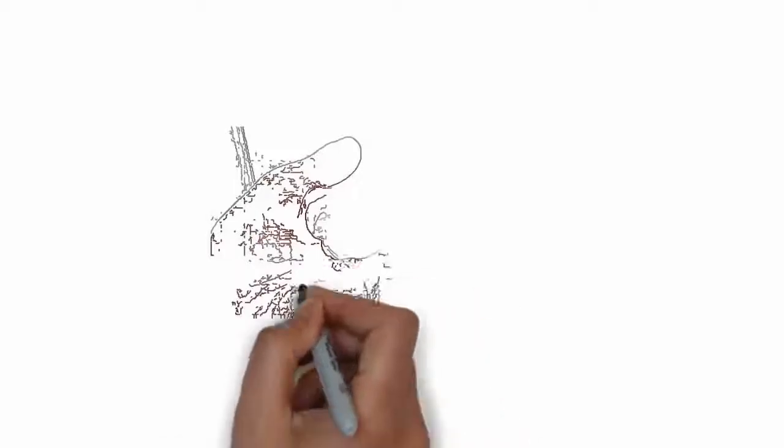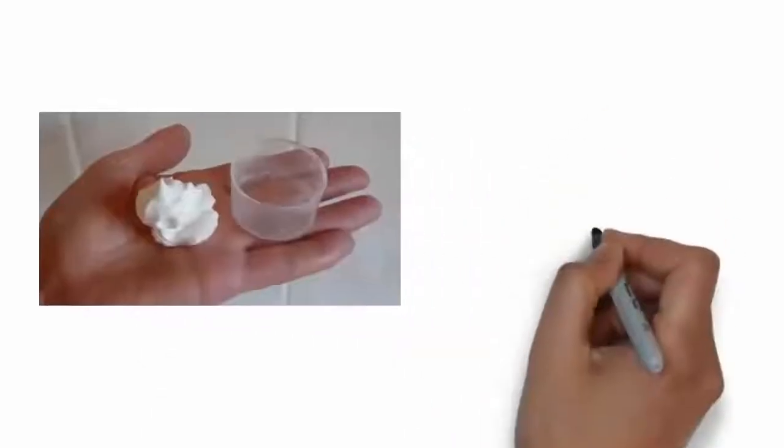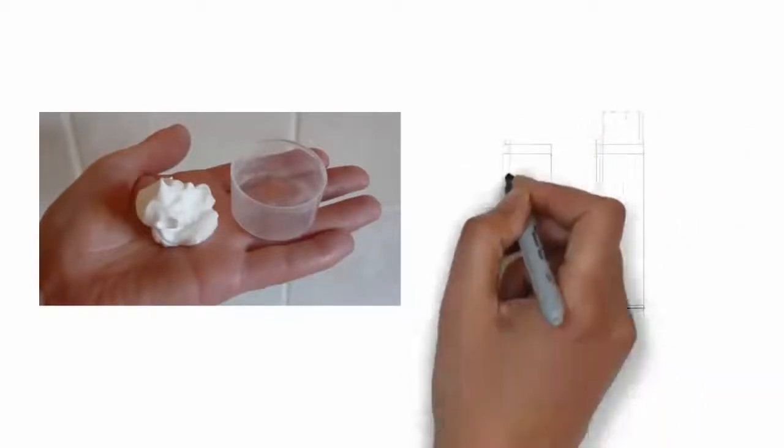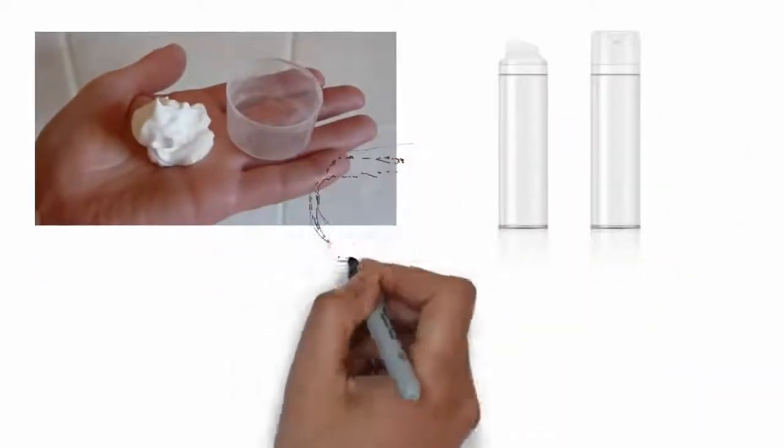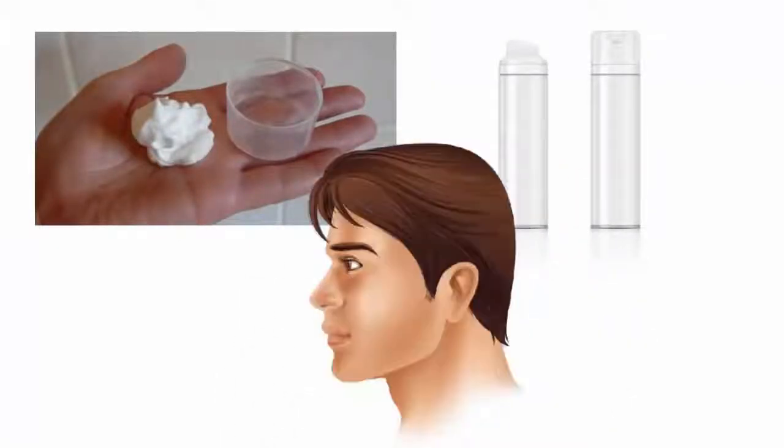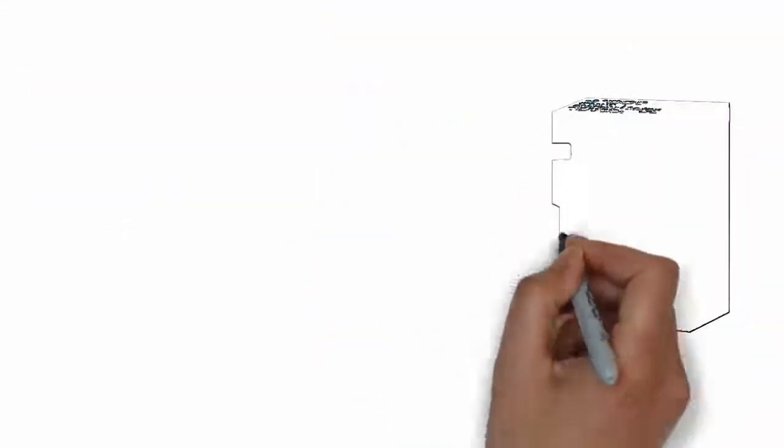The second minoxidil applicator is the foam. A minoxidil foam requires rubbing the treatment into the hair loss region. However, when attempting to do so, the solution may not fully penetrate the desired area, as it can get on the neighboring hair strands, resulting in a messy and wasteful application.